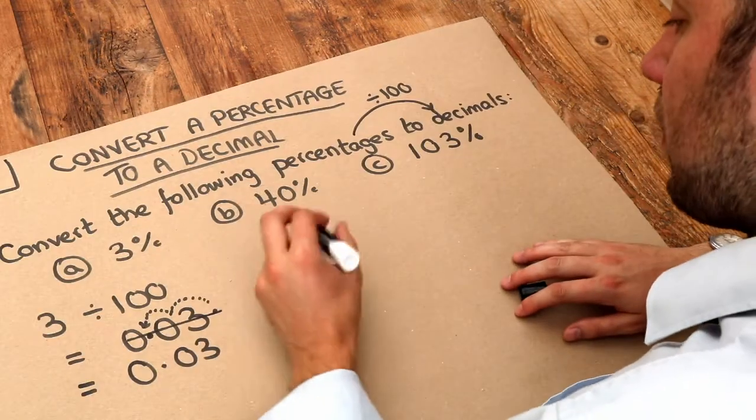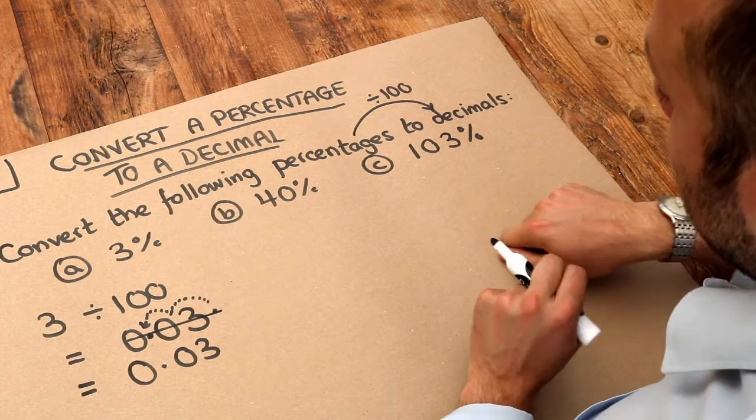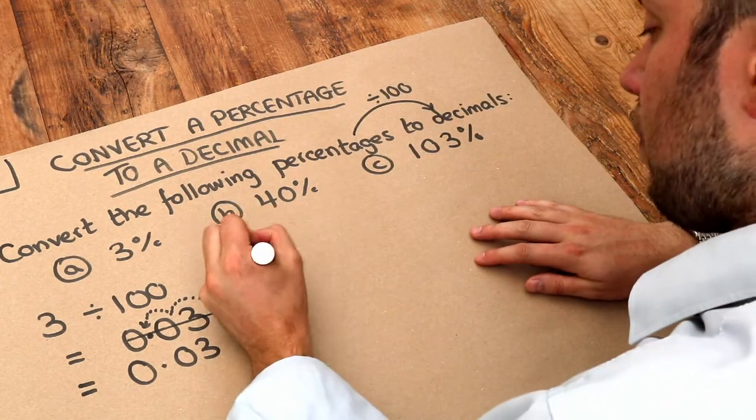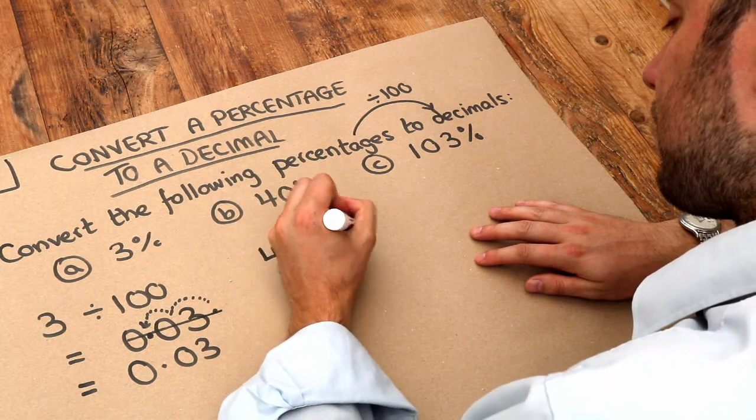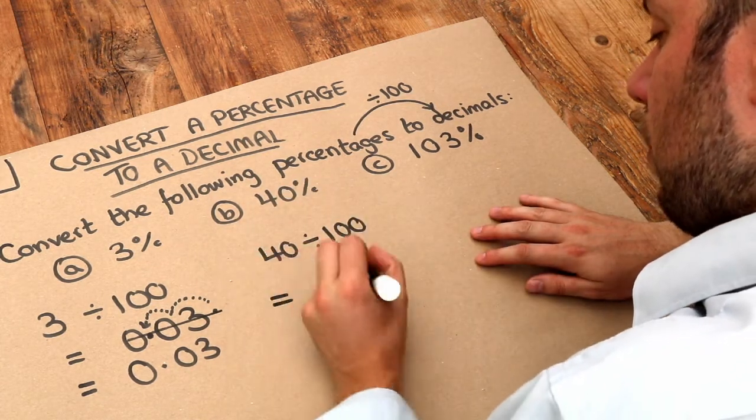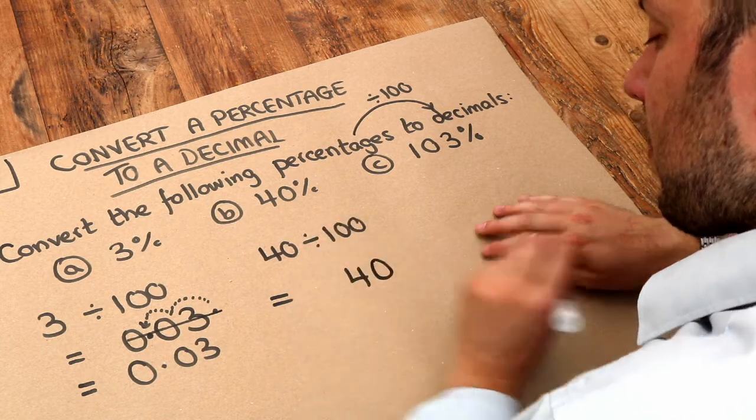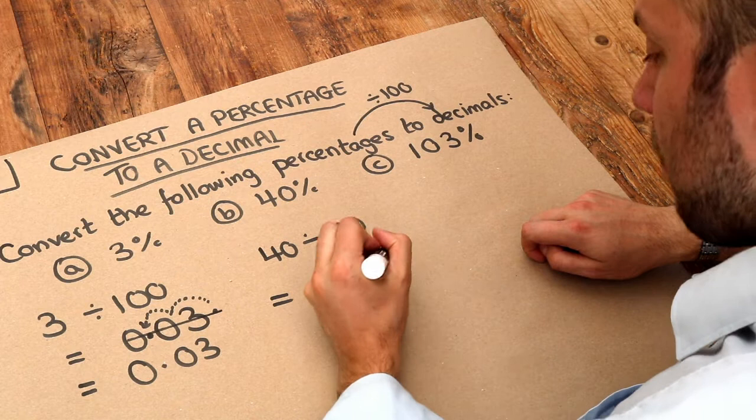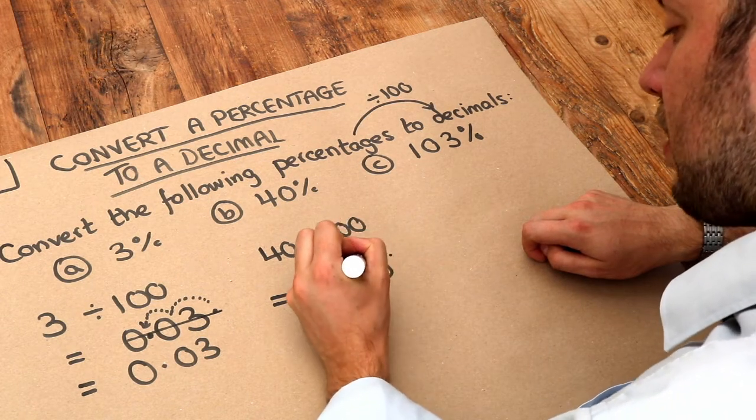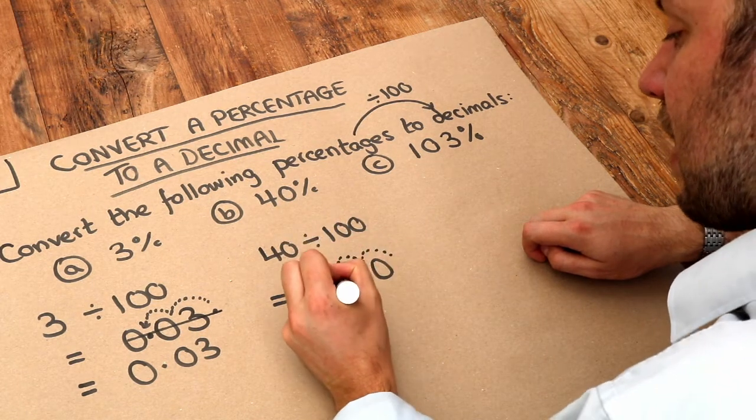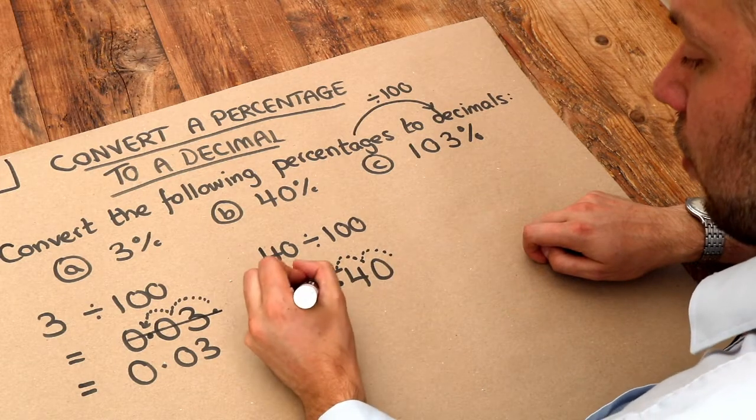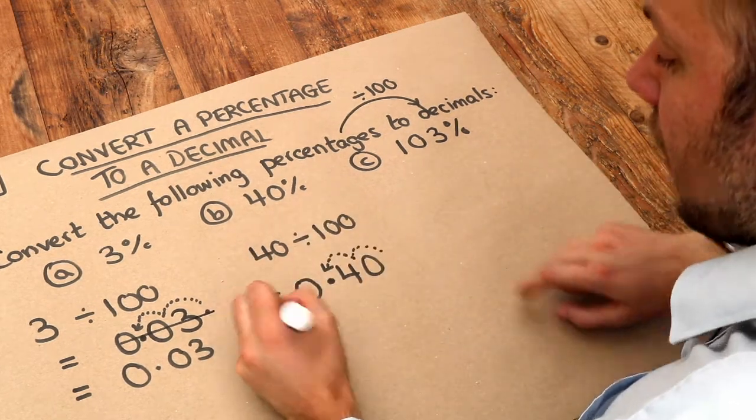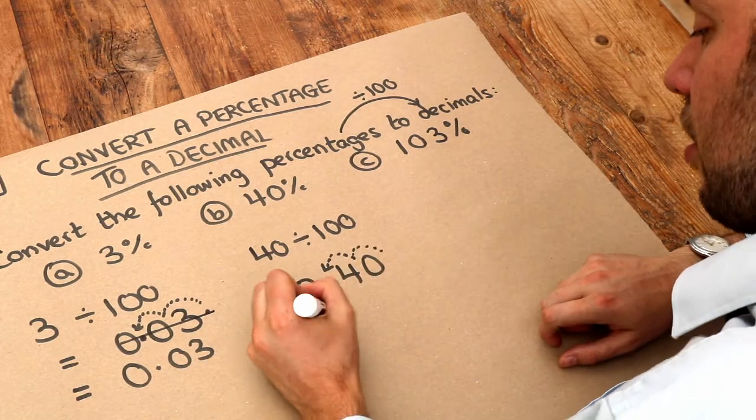What about the second one? 40%. So as I said, we divide by 100 to convert to a decimal. So 40 divided by 100. Well if you write the 40 here, at the moment the decimal point is at the end, just after the units digit. And then it moves one place, two places - the decimal point's now here. And obviously we put a zero on the front as the units digit. And we don't need that zero on the end - it's just 0.4.